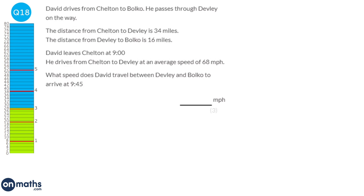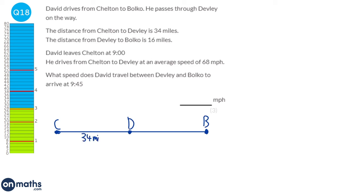There's a lot going on in this question, so it's best to draw a diagram. We start at Chelton (C), go to Bolko (B), passing through Devley (D). The distance from Chelton to Devley is 34 miles, and from Devley to Bolko is 16 miles. David leaves Chelton at 9 o'clock. He drives from Chelton to Devley at an average speed of 68 miles per hour.